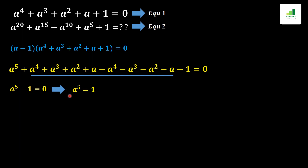Moving minus 1 to the other side of the equation gives us a to the power 5 equal to 1. So we have found that a to the power 5 equals 1.